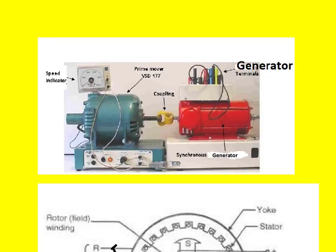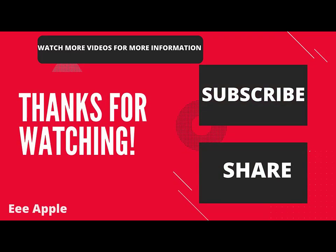We have also seen how the generator looks externally — a motor is coupled to the rotor of the generator, and from the generator stator winding we get terminals from which we obtain the AC power. Thank you.